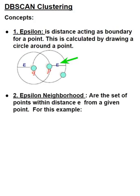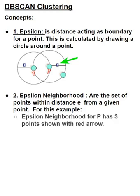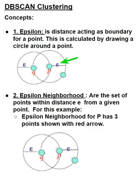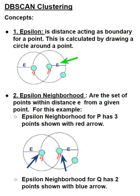The next concept is an epsilon neighborhood, which refers to the set of points within distance epsilon from a given point. Essentially, it contains all the points contained in the circle, where the radius of the circle is epsilon. Let's look at this example. For point B in the diagram, we have three points part of the epsilon neighborhood, which we have highlighted in red arrows. For point Q, we have only two points in the epsilon neighborhood, which we have shown with blue arrows.